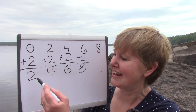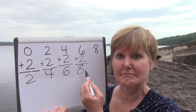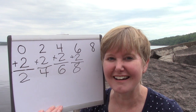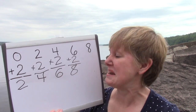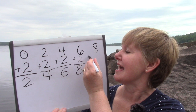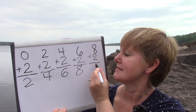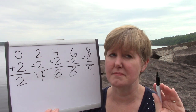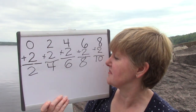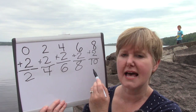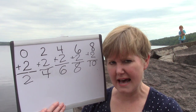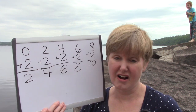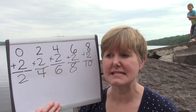Let's look at these answers again: two, four, six, eight. What do you think the next answer will be? Did you say ten? You're right — eight plus two is ten. Two, four, six, eight, ten. Whenever we add the number two to an even number, our answer is always the next even number.